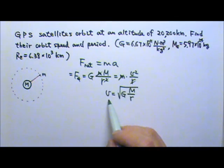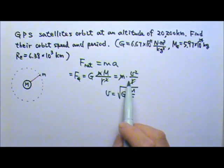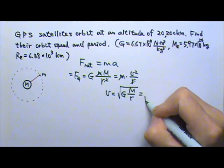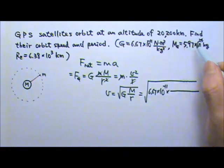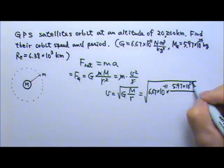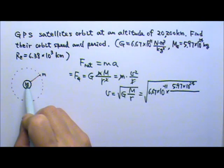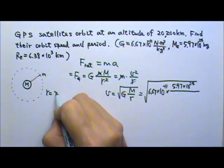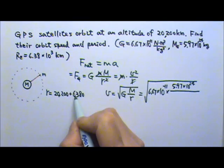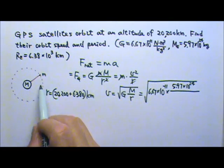Now, I will not memorize this equation. If I need to find the orbit speed, I can just easily find it, starting with the net force equals to ma, the gravitational force equals the centripetal force. So this would equal to the square root of the big G, 6.67 times 10 to the negative 11 times the mass of the earth, 5.97 times 10 to the 24th. And then divided by the r. r is the distance between the little m all the way to the center of the big M. So it's not just the altitude, but the altitude plus the radius of the earth. So the r really is 20,200 plus 6,380. This many kilometers.